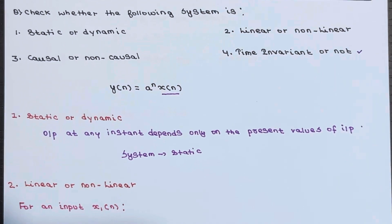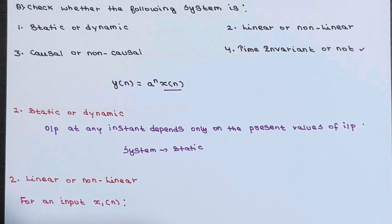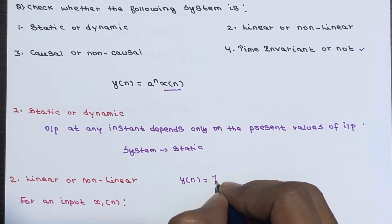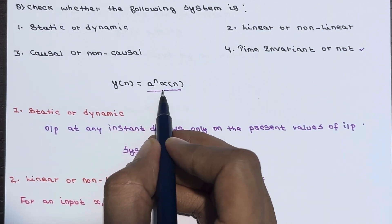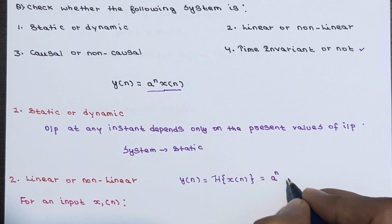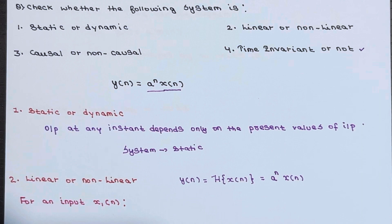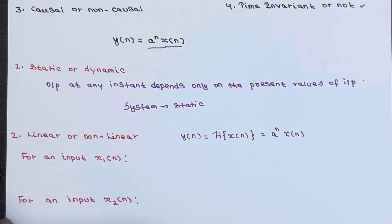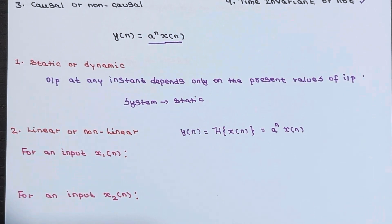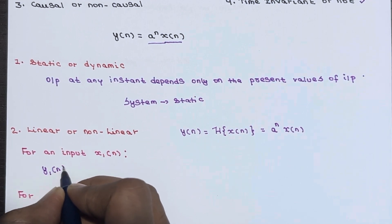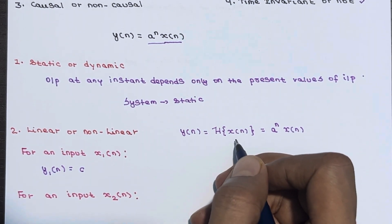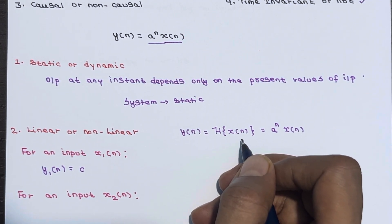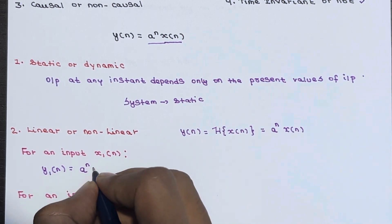Now let's check linearity — whether the system is linear or nonlinear. The general expression is y(n) = T[x(n)], and here y(n) = a^n · x(n). To check linearity, for an input x1(n), the output y1(n) = T[x1(n)] = a^n · x1(n).